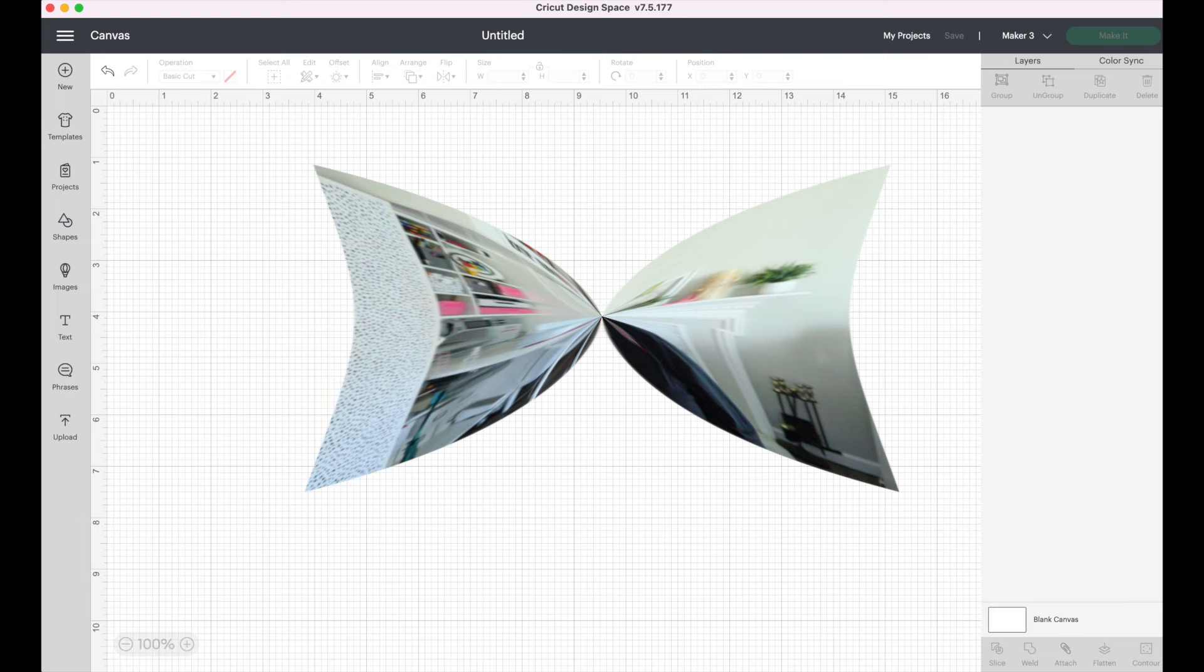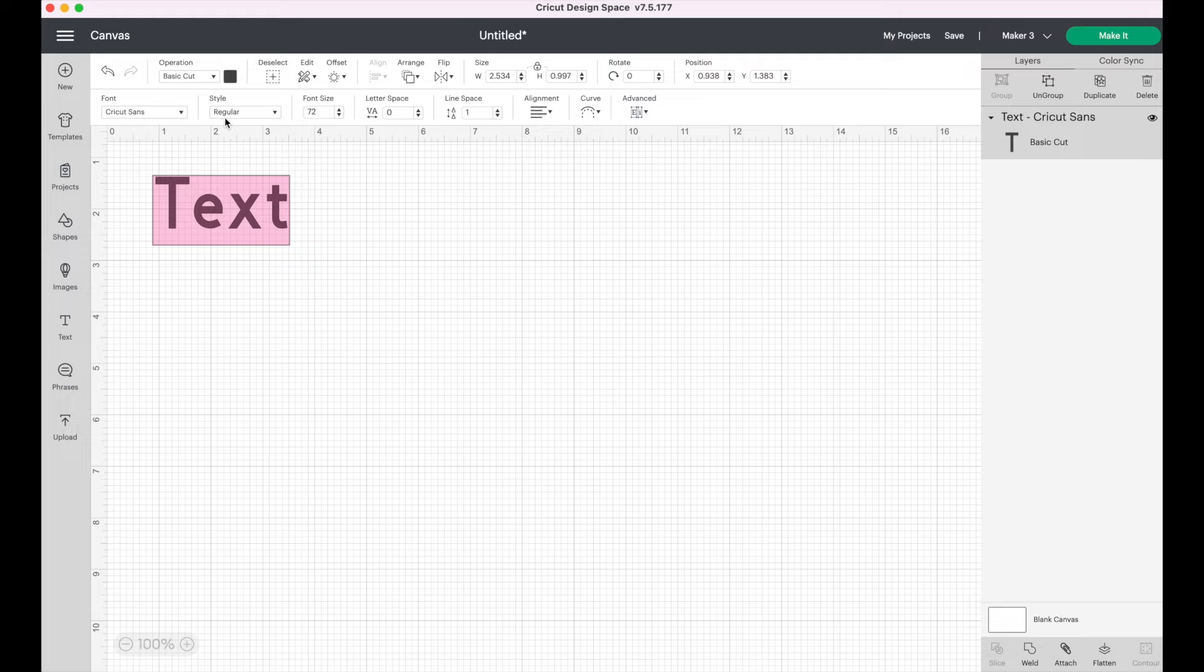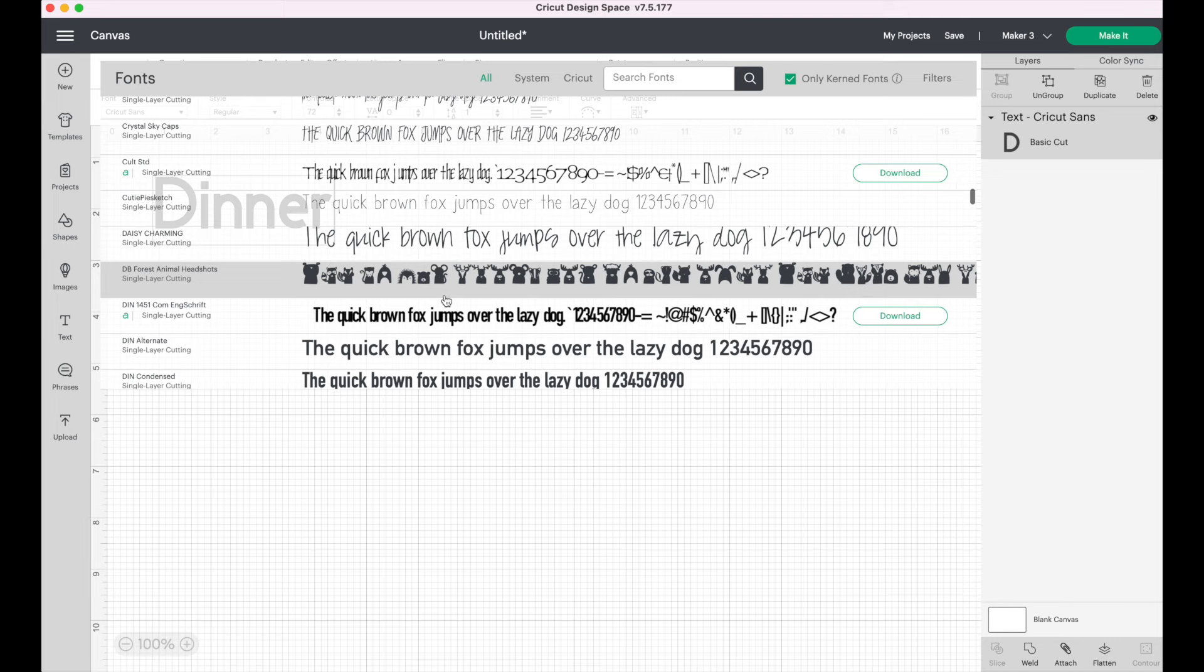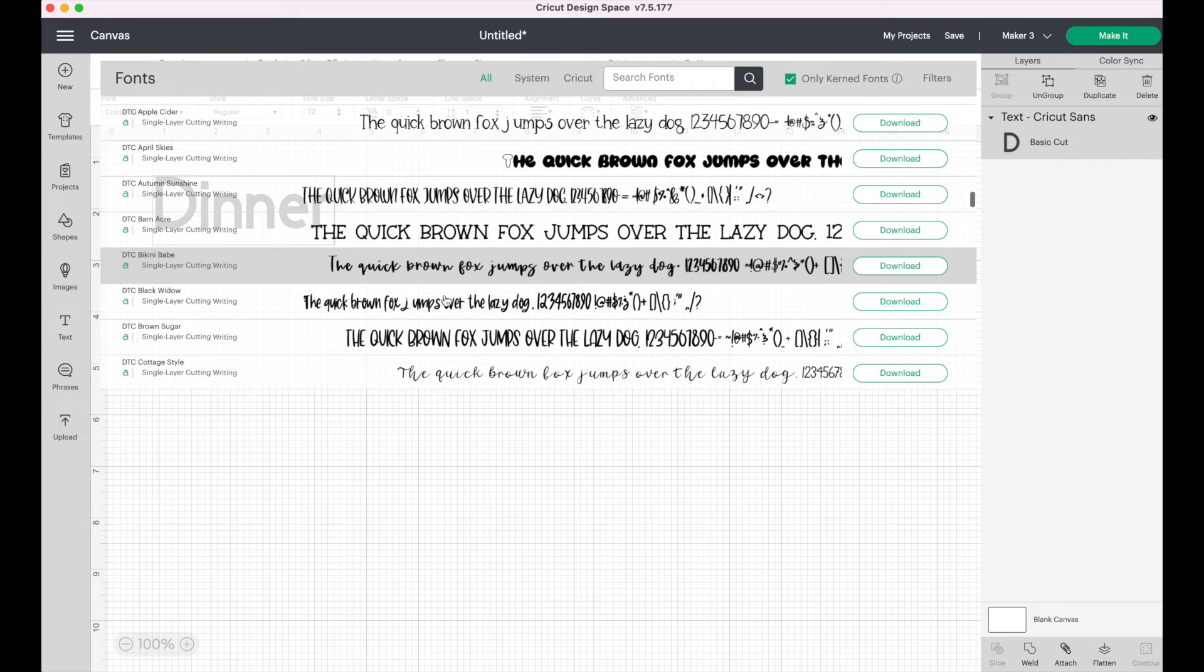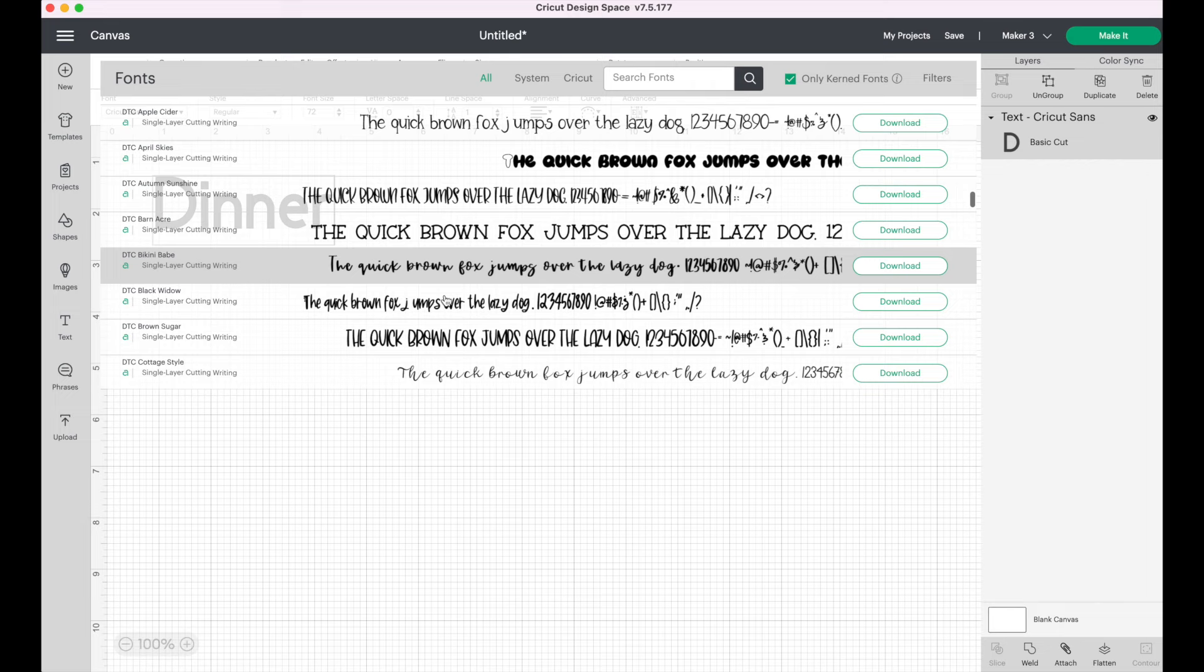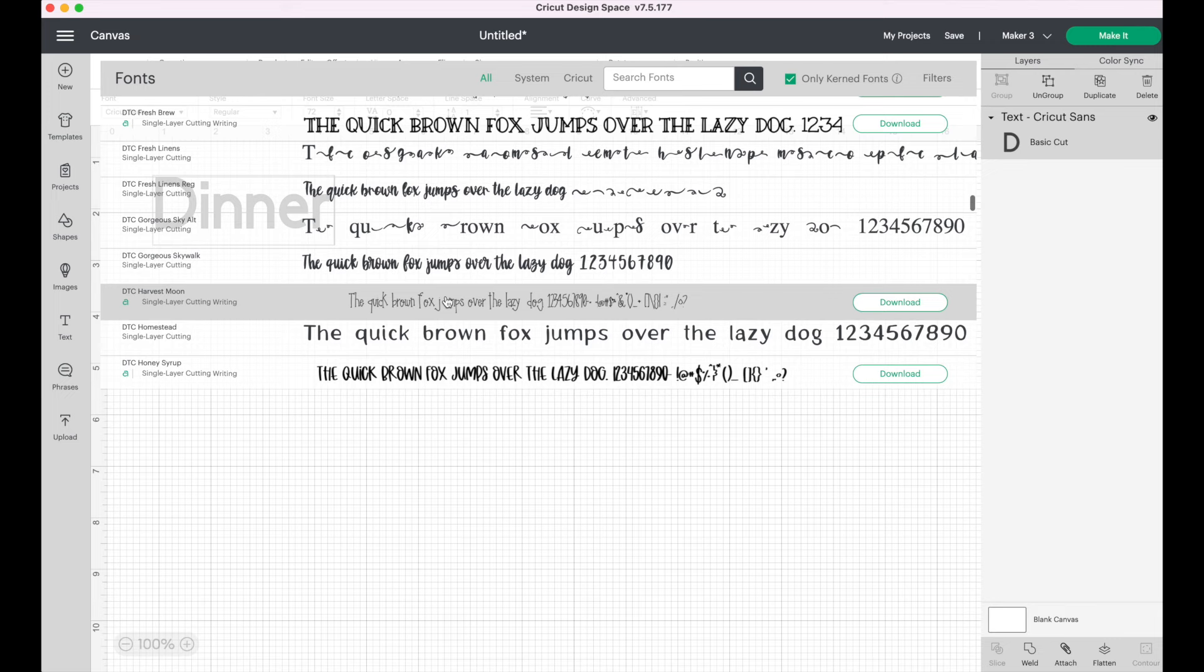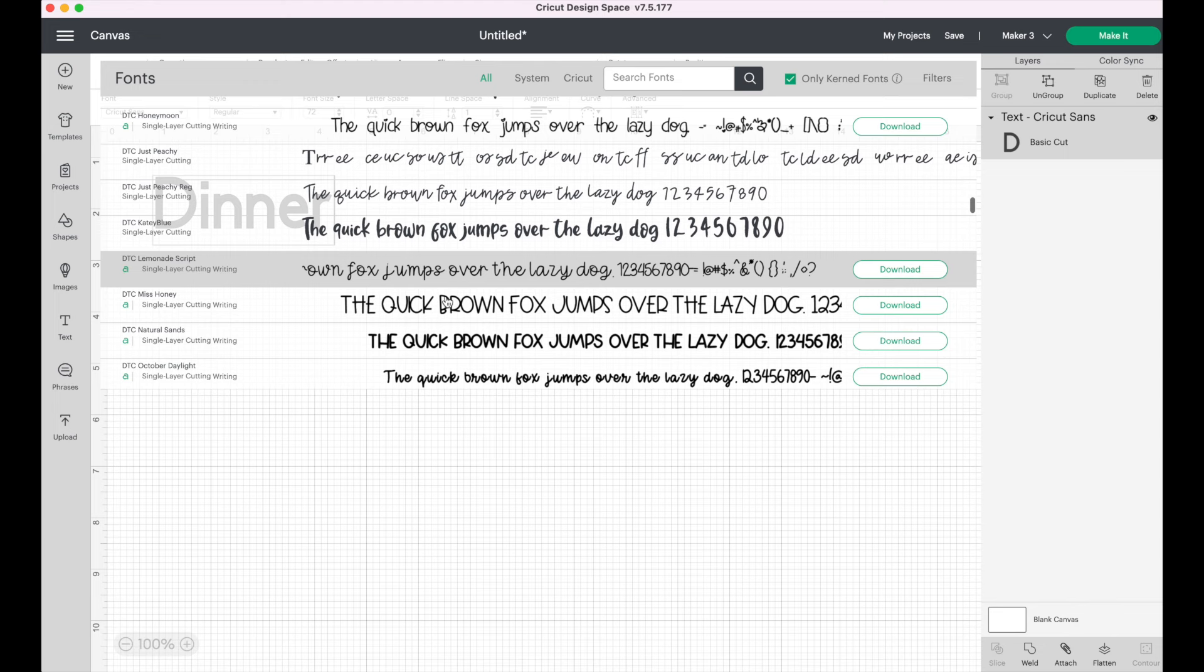Here we are in Cricut Design Space. The first thing I'm going to do is click on text. Once I see the text, I'm going to type in the word dinner and I'm going to go to the font called DTC Peach Cakes. This is part of Cricut Access if you're a Cricut Access member.